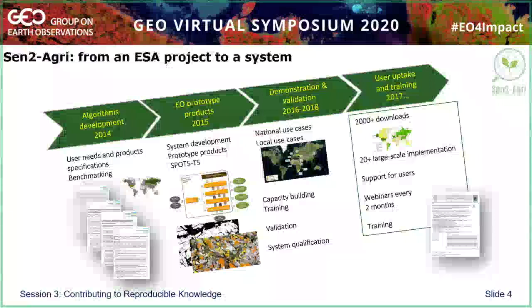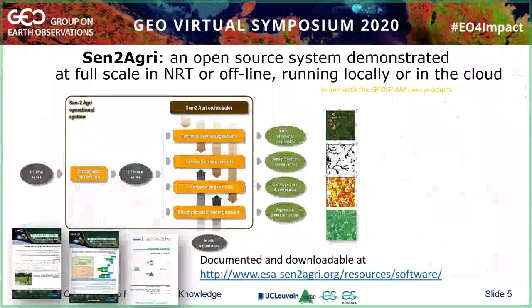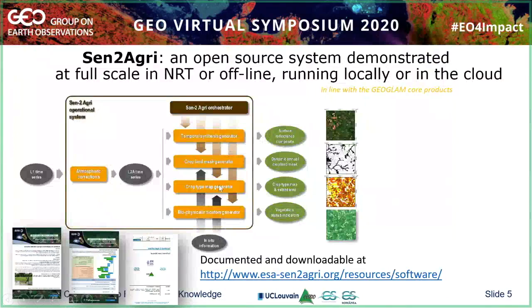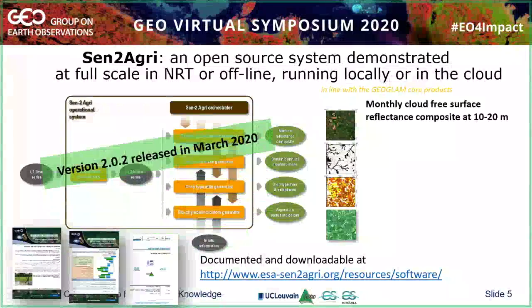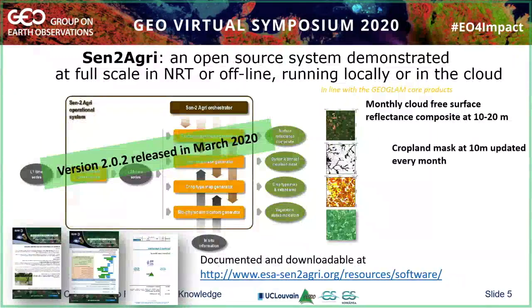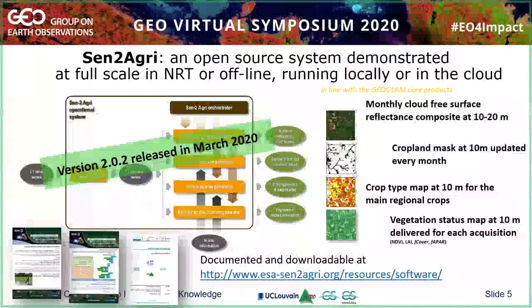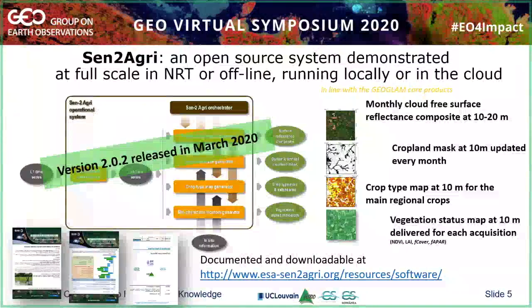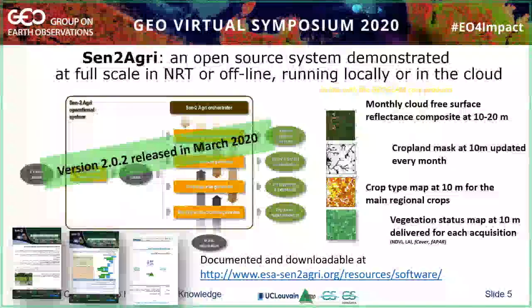So what is Sent2Agri? Sent2Agri is an open source system — starting from reading or downloading level one products, it includes a module for atmospheric correction, and then when you have the level two products, there are four processors in the system which generate four kinds of products: monthly cloud-free surface reflectance composites at 10–20 meters, cropland masks at 10 meters updated every month, crop type maps at 10 meters for the main regional crops, and vegetation status maps at 10 meters delivered for each acquisition. You can download it on the website, it has been demonstrated at national scale in several countries, and the system can run locally on a local server or in the cloud.